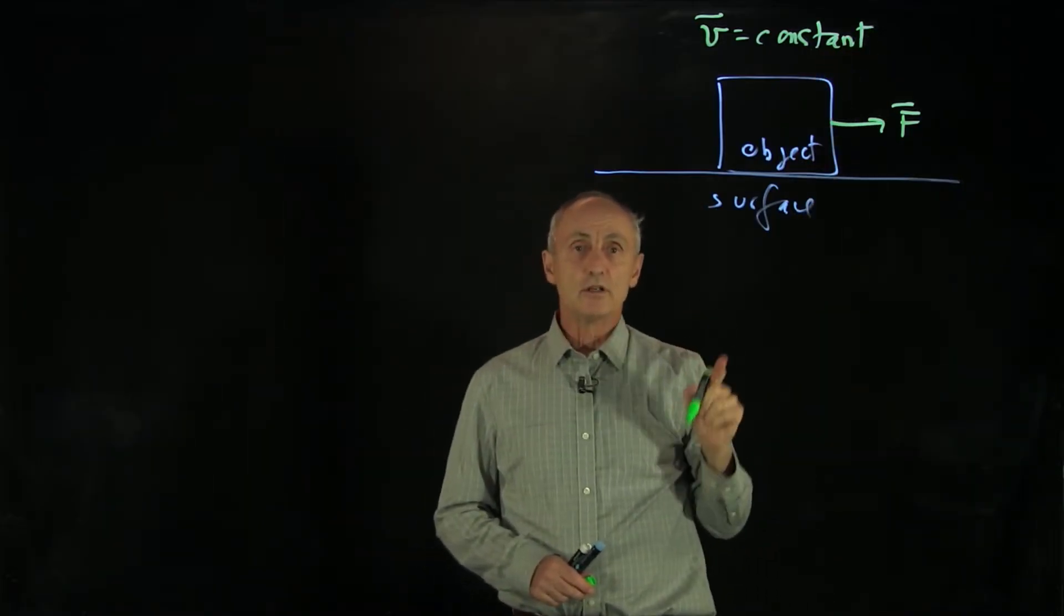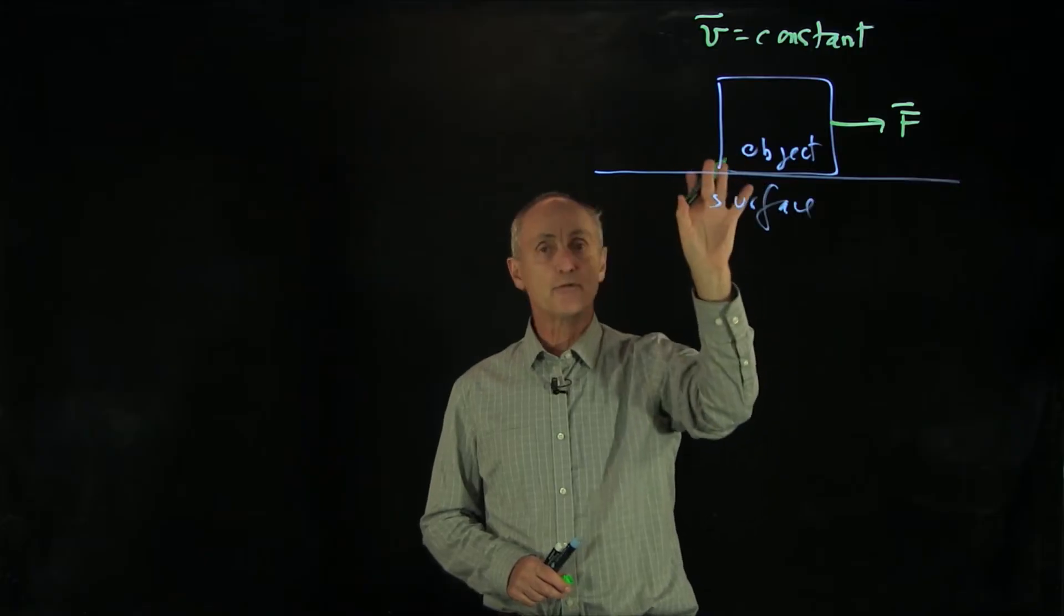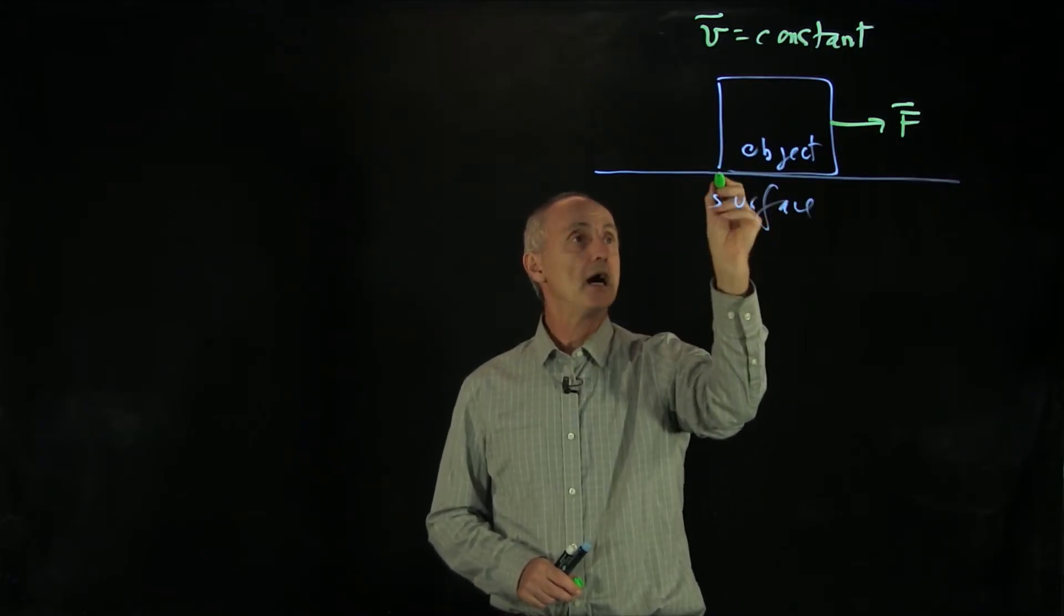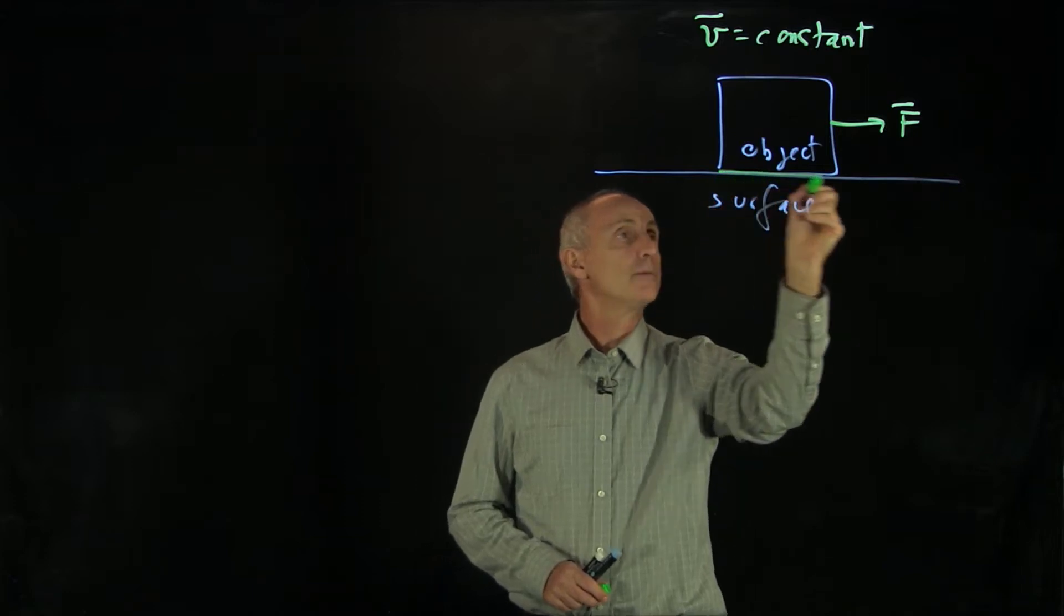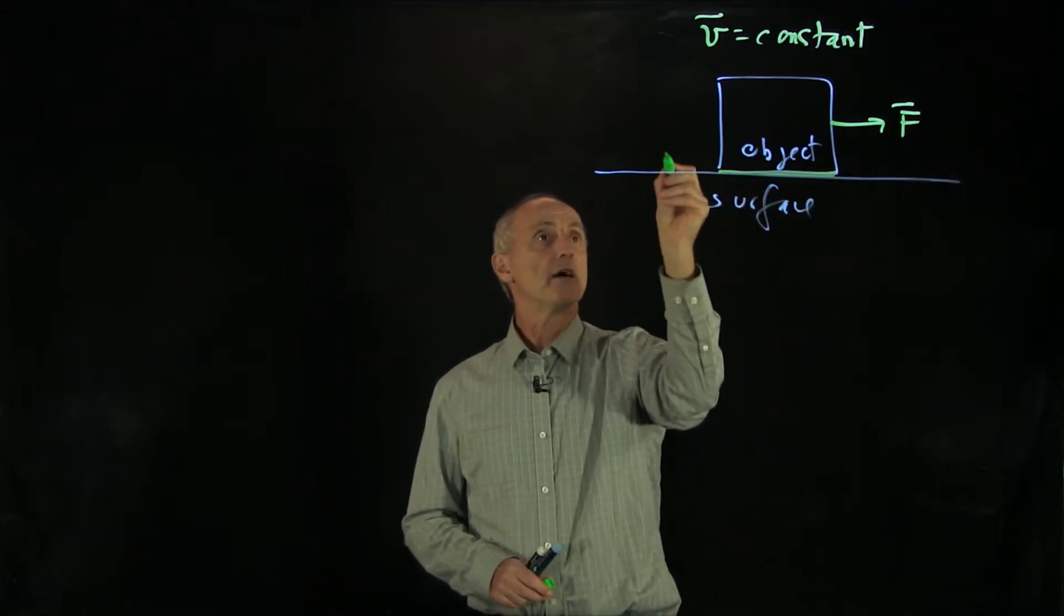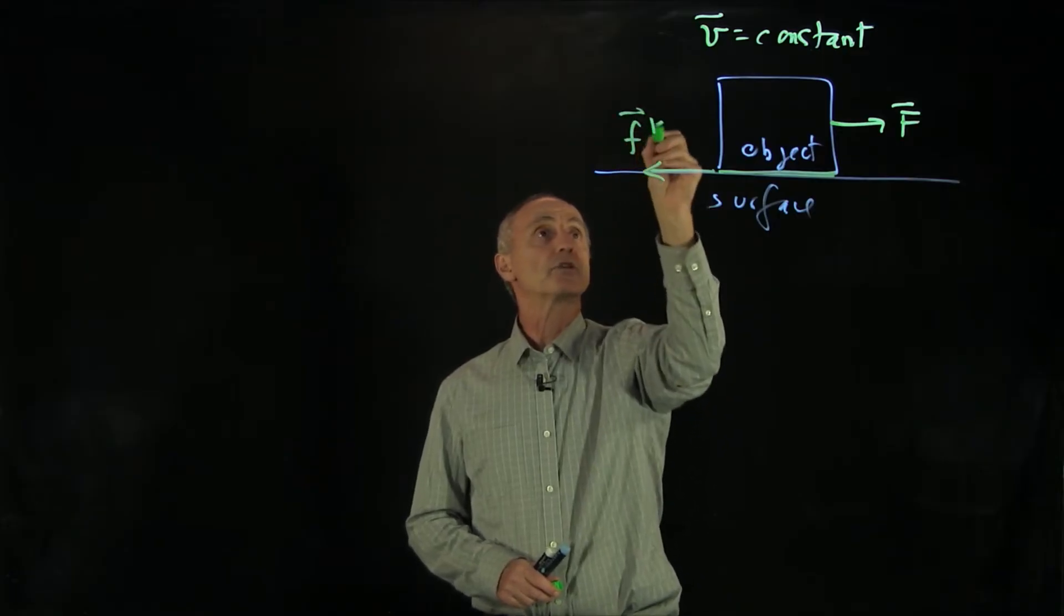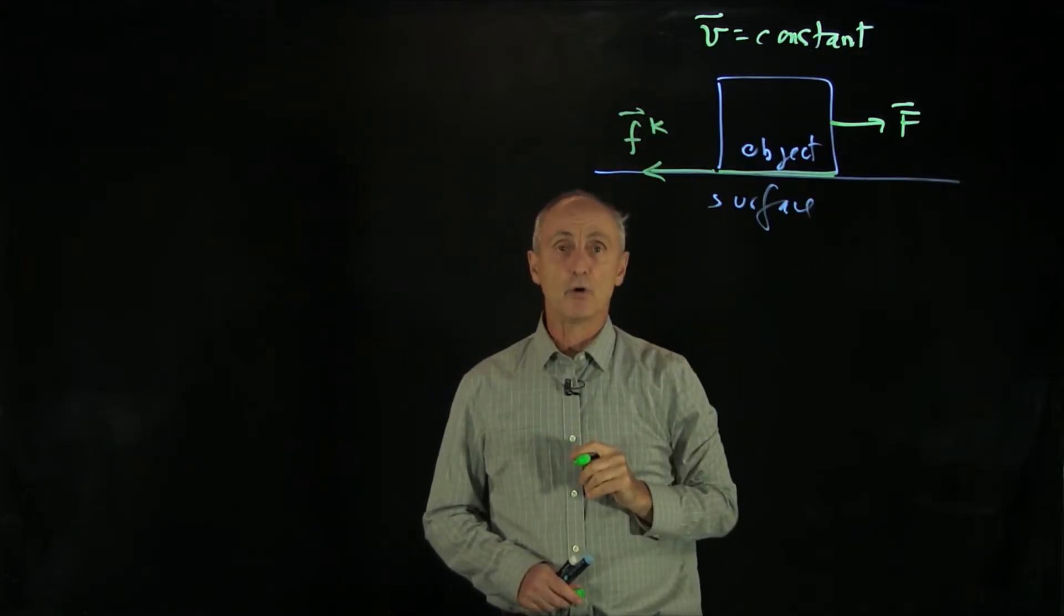Then what we see here is that there has to be some type of force that's opposing this object, interaction between the object and the surface, that's distributed over the surface. I'll write an arrow here to express that force. That's the tangential component of the force.